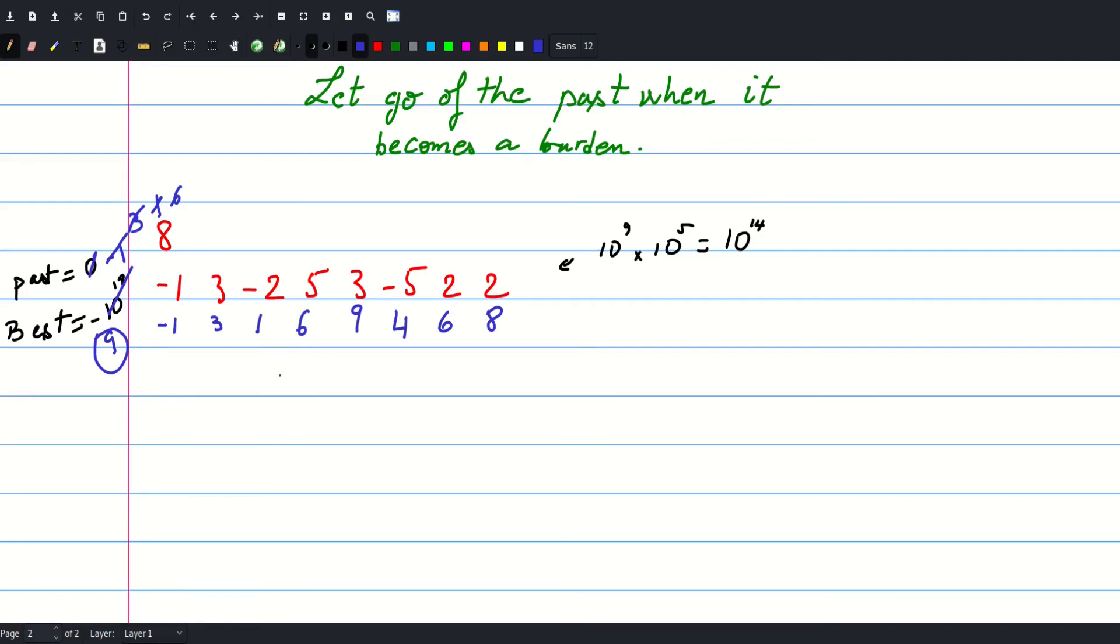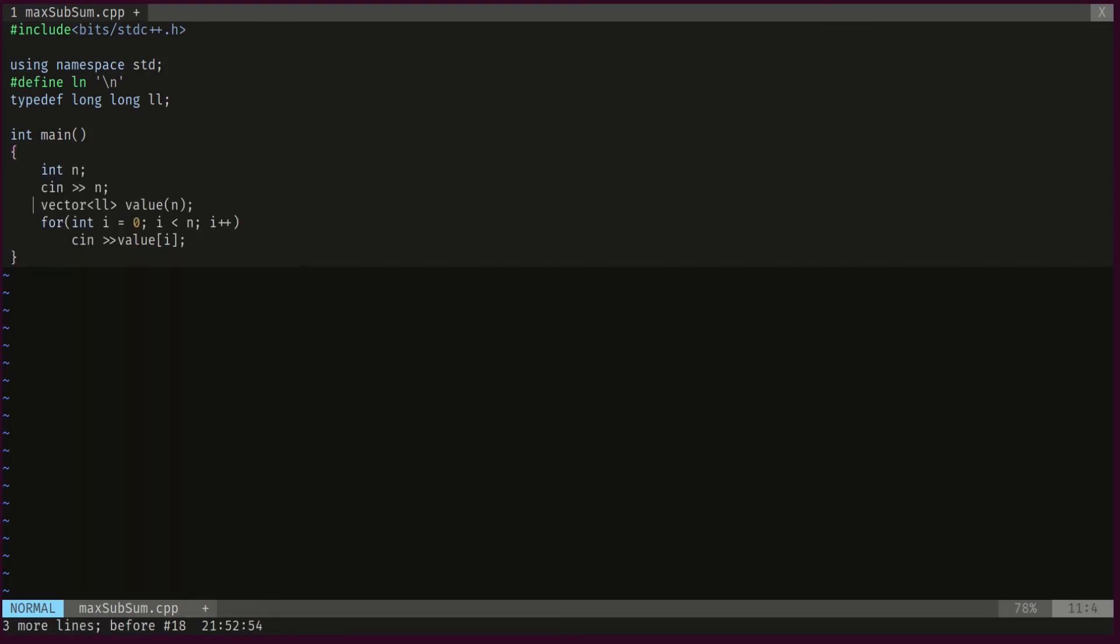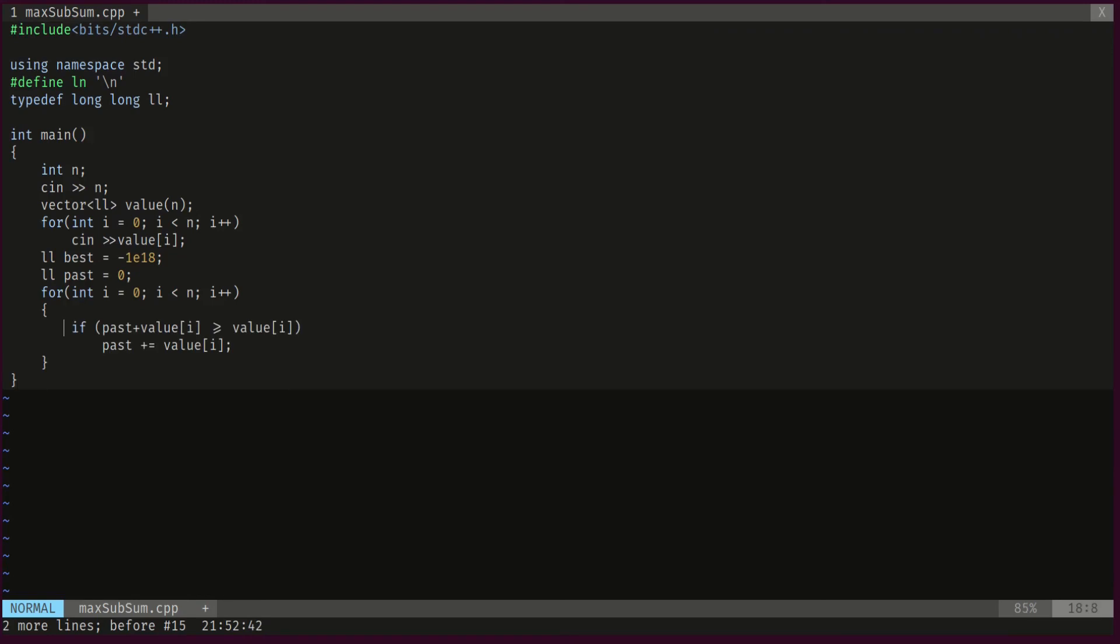So that's pretty much it. Let's see how that looks like in the code. So we start by reading our length of the array. We declare our vector of values and remember we use long long because we don't want any overflow issues. So we scan our values. Then we declare these two variables that we talked about: the best which we initialize with minus a billion and then the past which we set to zero to start with.